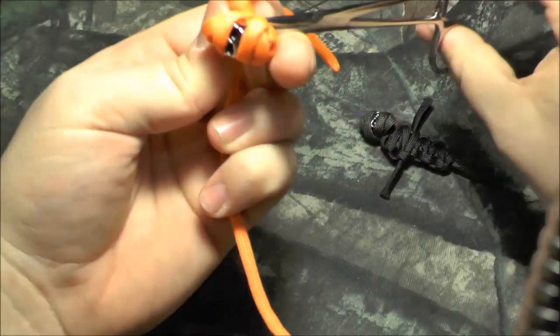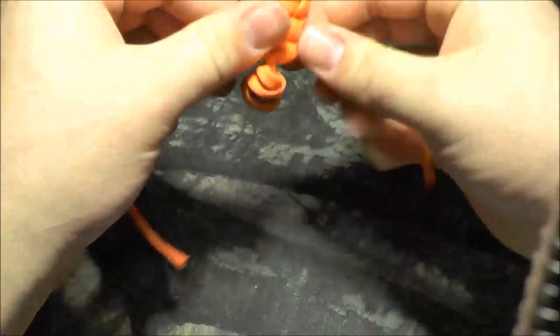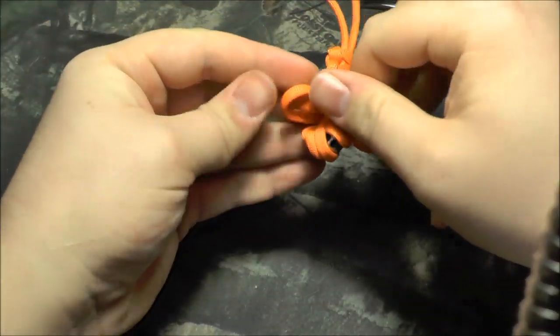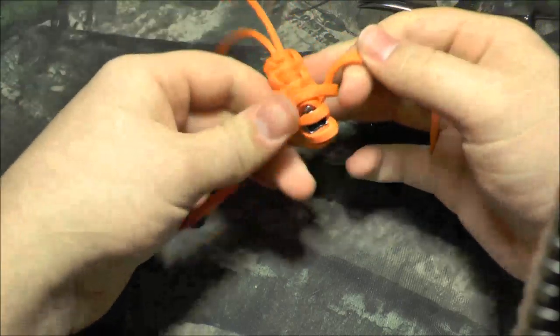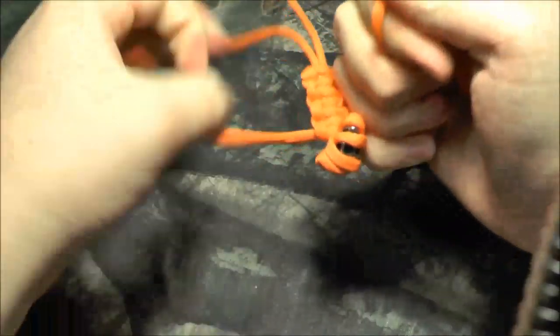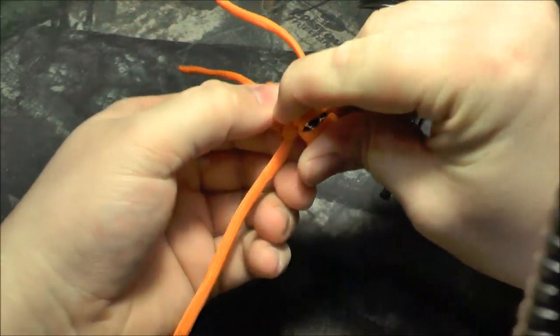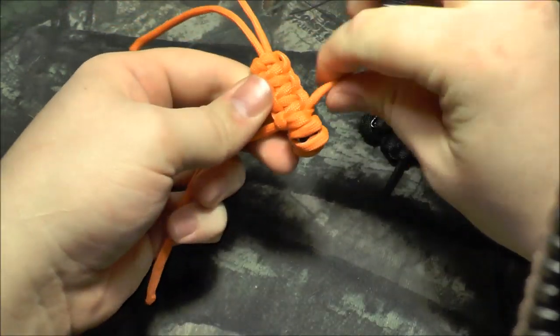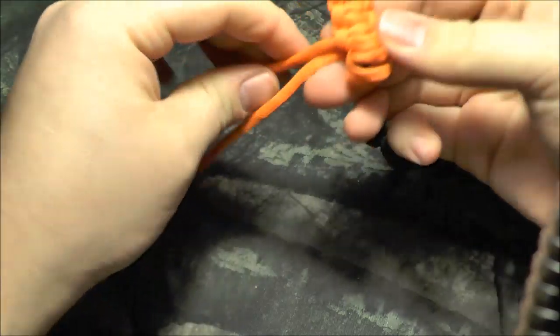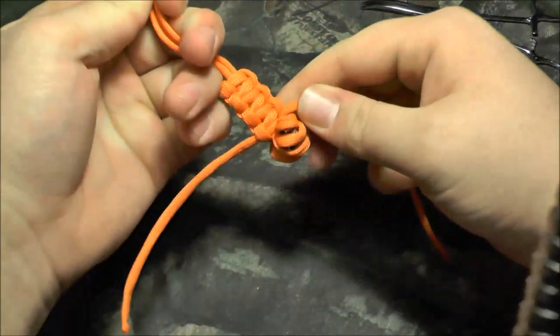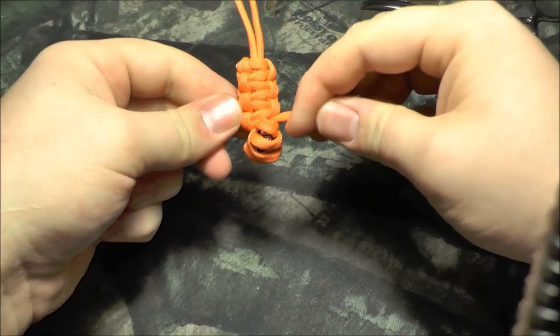Try not to jiggle his head too much, it can still come undone. Again, keeping track of all of his wraps to make sure he stays wrapped right. And then you can pull on his legs to cinch the cobra up.